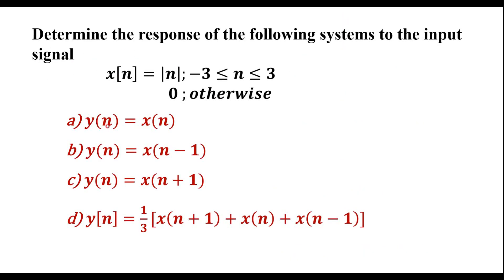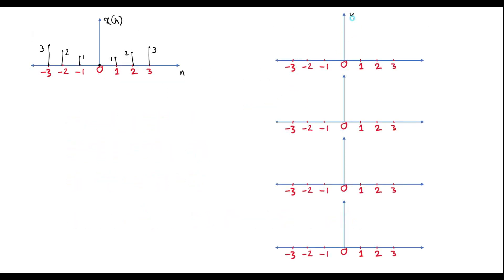Now let us calculate part (a): y[n] = x[n]. Since y[n] is the same as x[n], the signal is identical. At n=0, value is 0; then 1, 2, 3 on the positive side and 1, 2, 3 on the negative side. This is the solution for part (a).